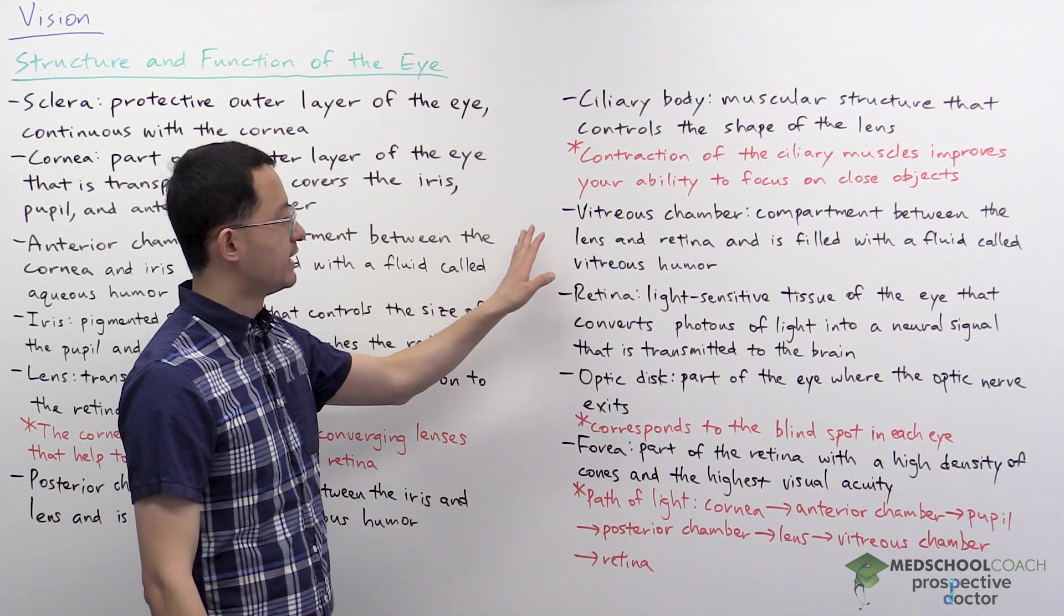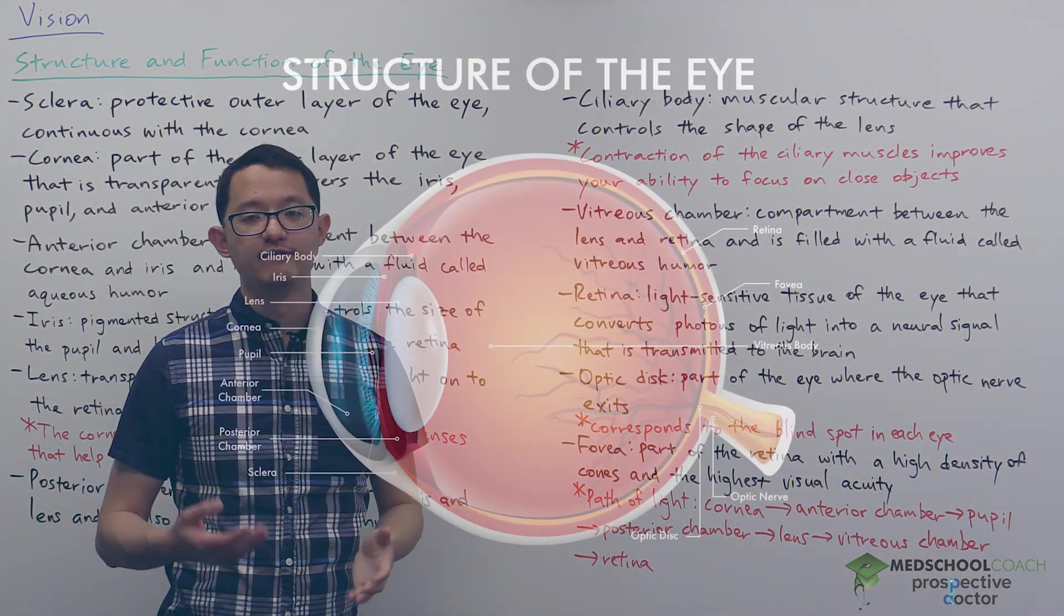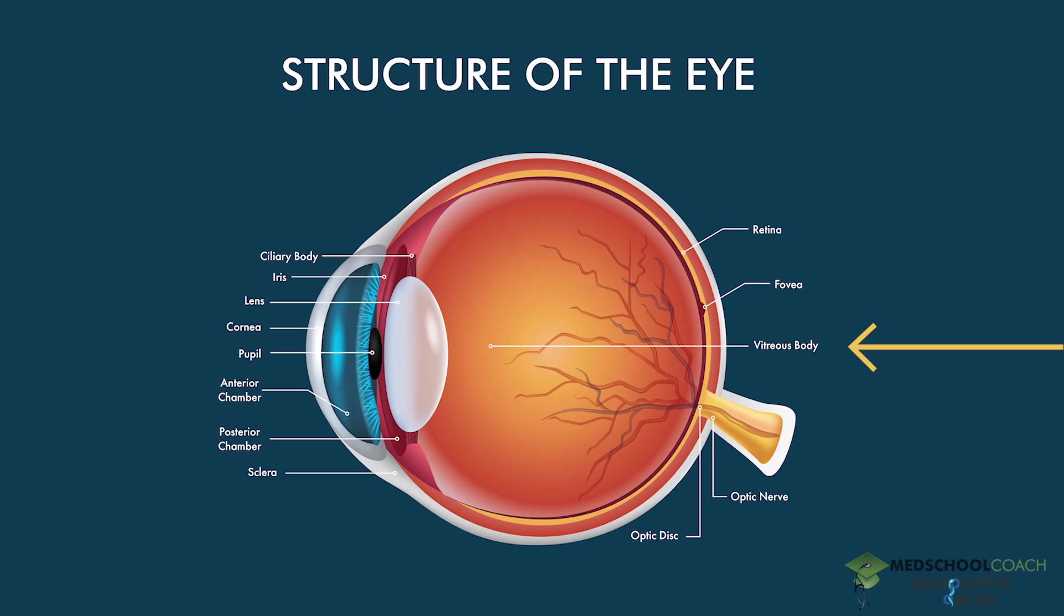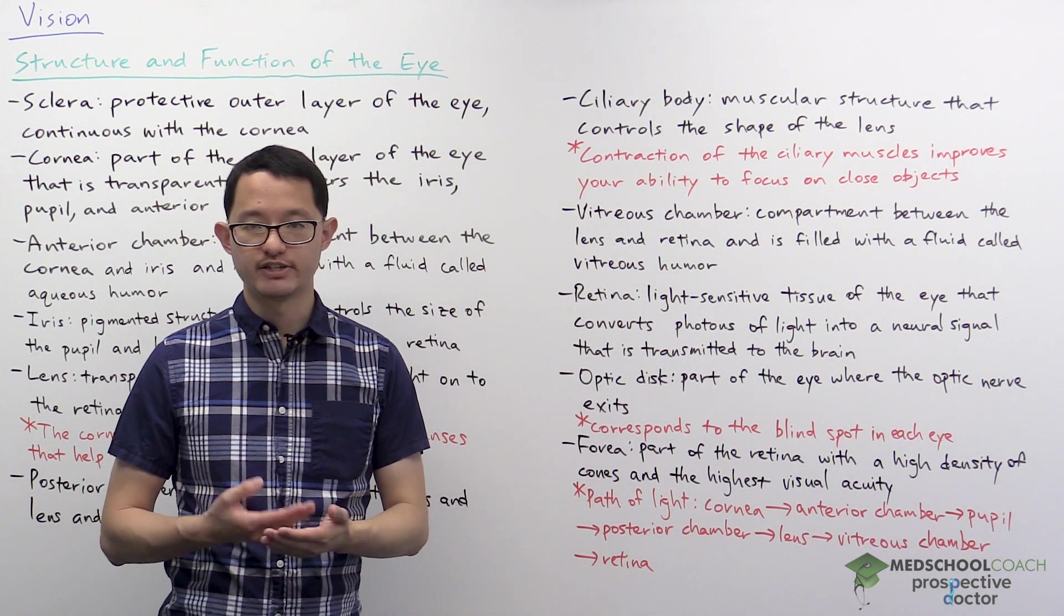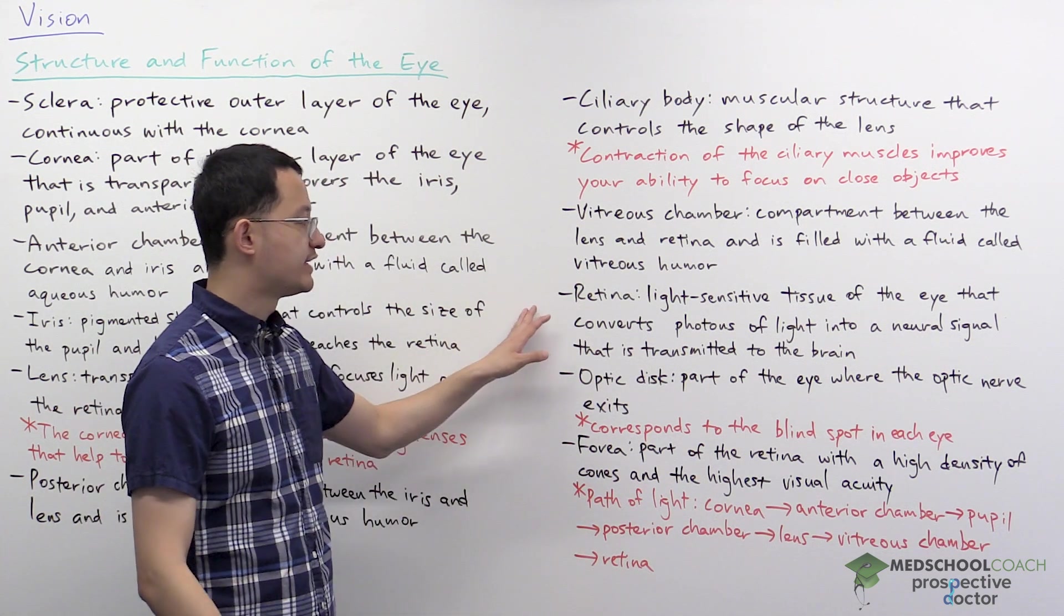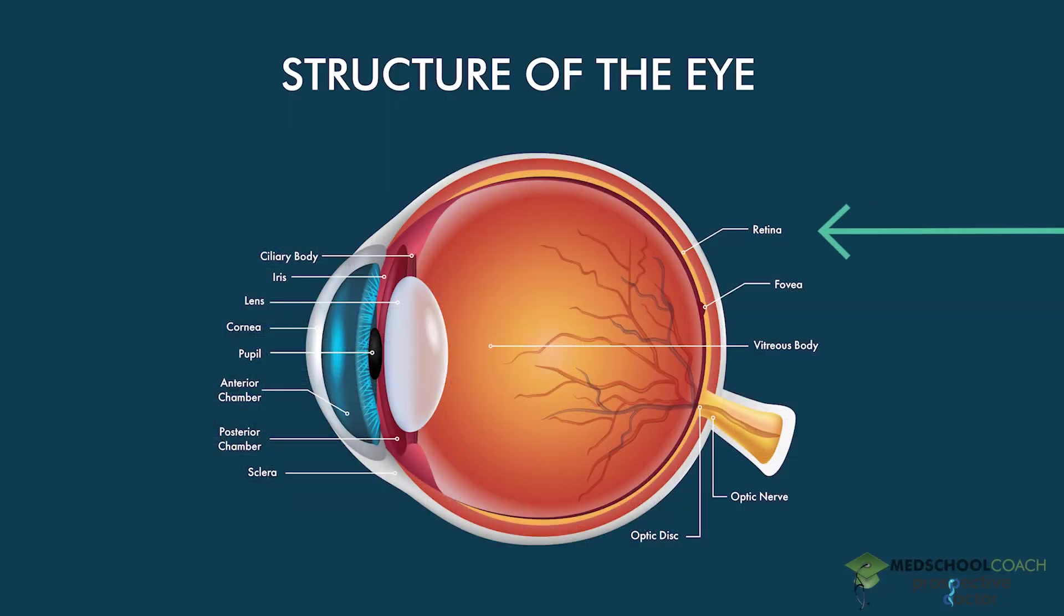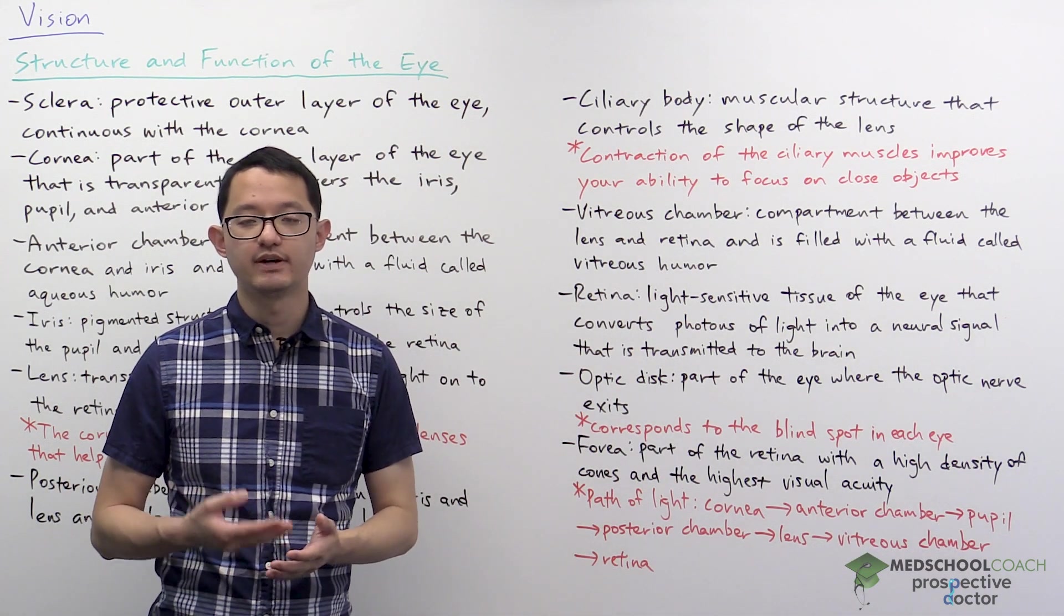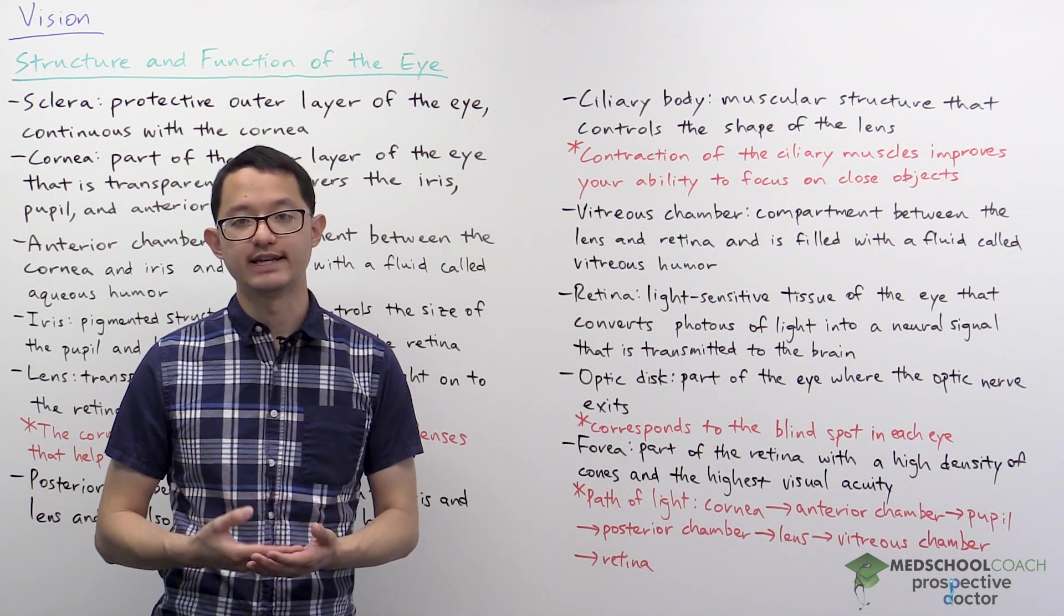So next we have the vitreous chamber. As you can see from the diagram, the vitreous chamber is the compartment between the lens and the retina, and it's filled with a fluid called vitreous humor. Light is going to pass through the vitreous humor and reach the retina. You can see in the diagram that the retina is the back part of the eye, and it's a light-sensitive tissue that is responsible for converting photons of light into an electrical neural signal that is sent to the brain.